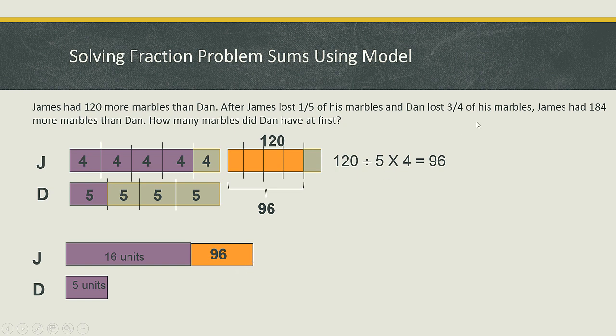From here, the question says that James had 184 more marbles than Dan. So the gap here will stand for 184. From the model we can see clearly that from here to here is 11 units because 16 minus 5 is 11. So the 11 units from here to here will be the same as 184 minus 96. And so 184 minus 96 will give me 88, and one unit will be 88 divided by 11, will give me 8.